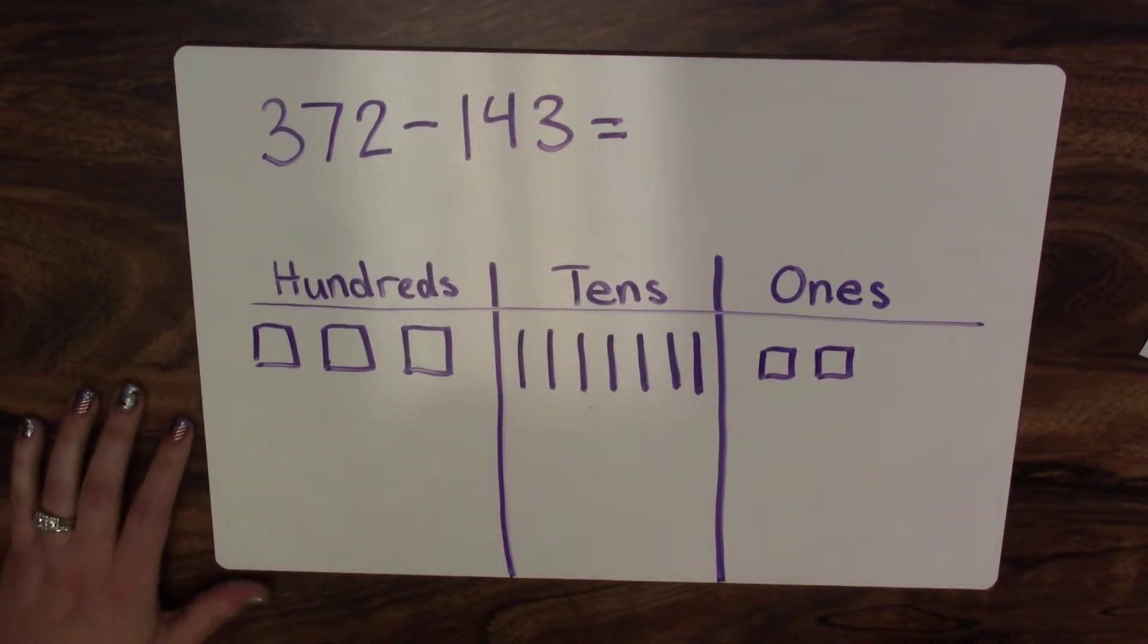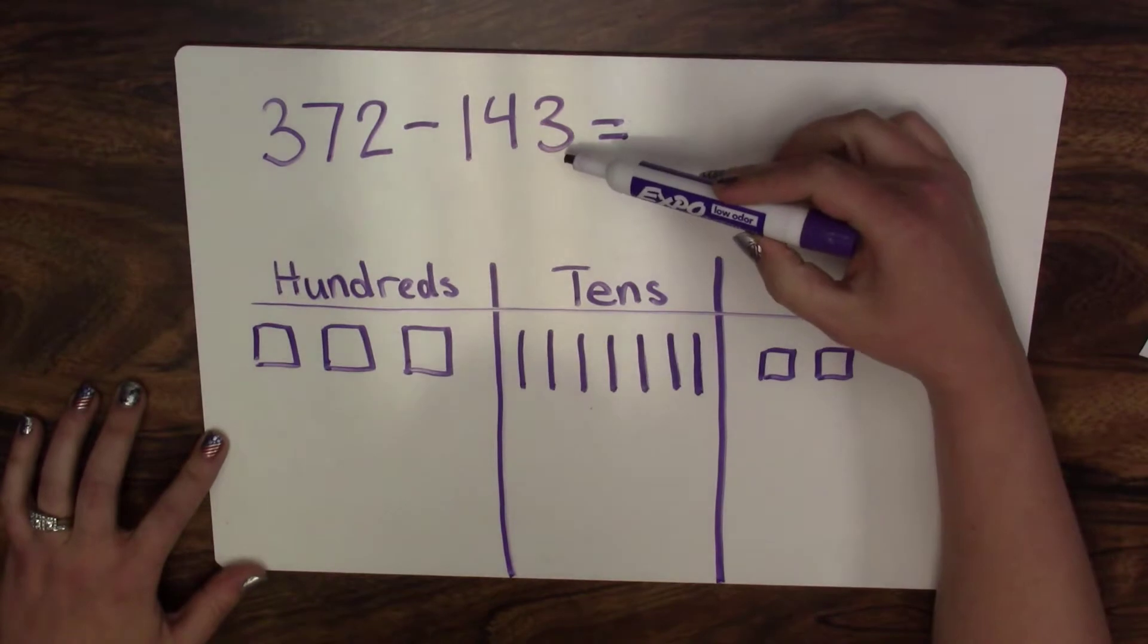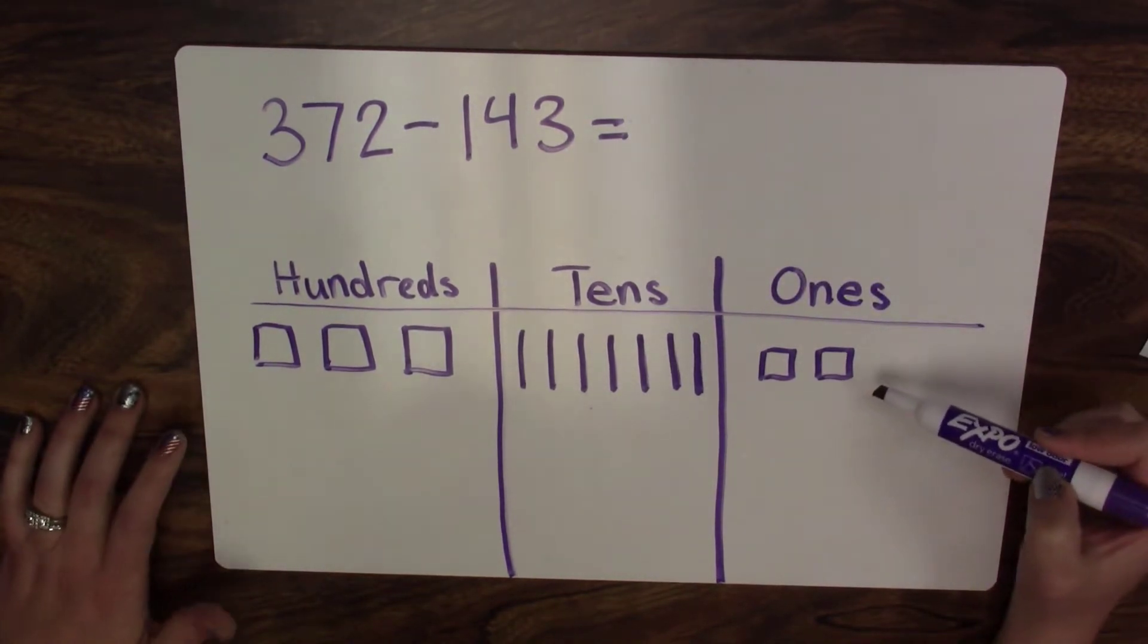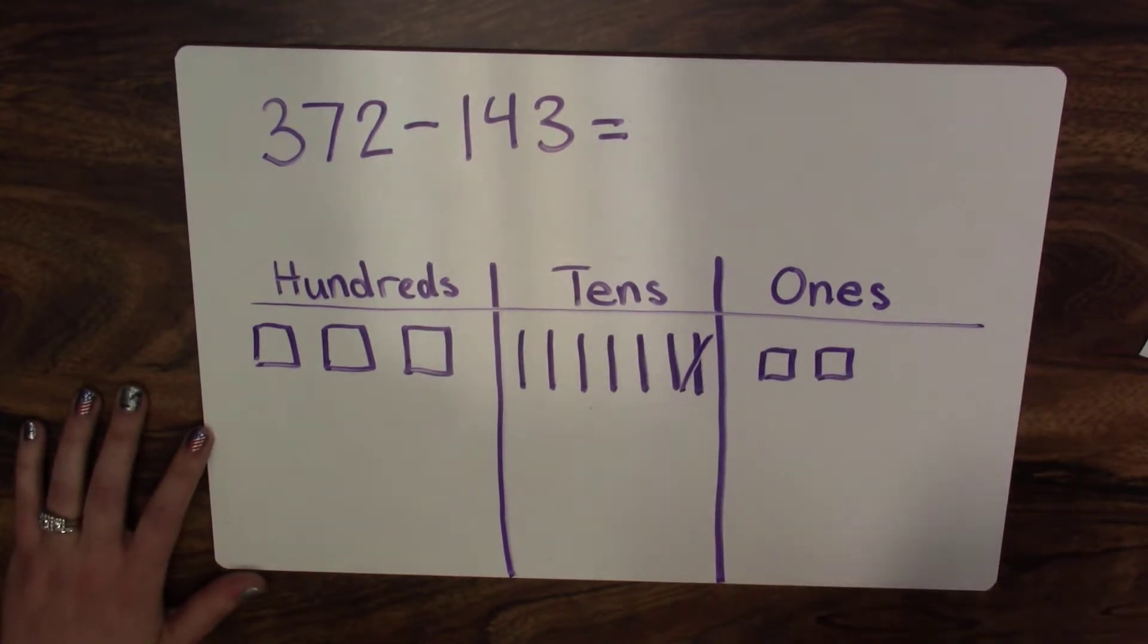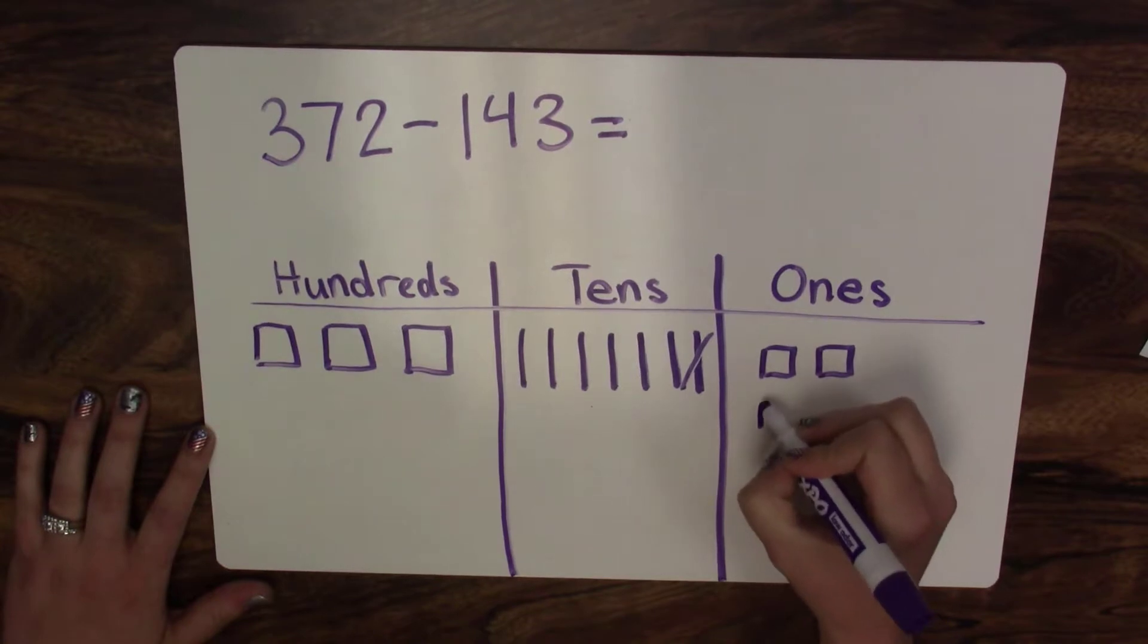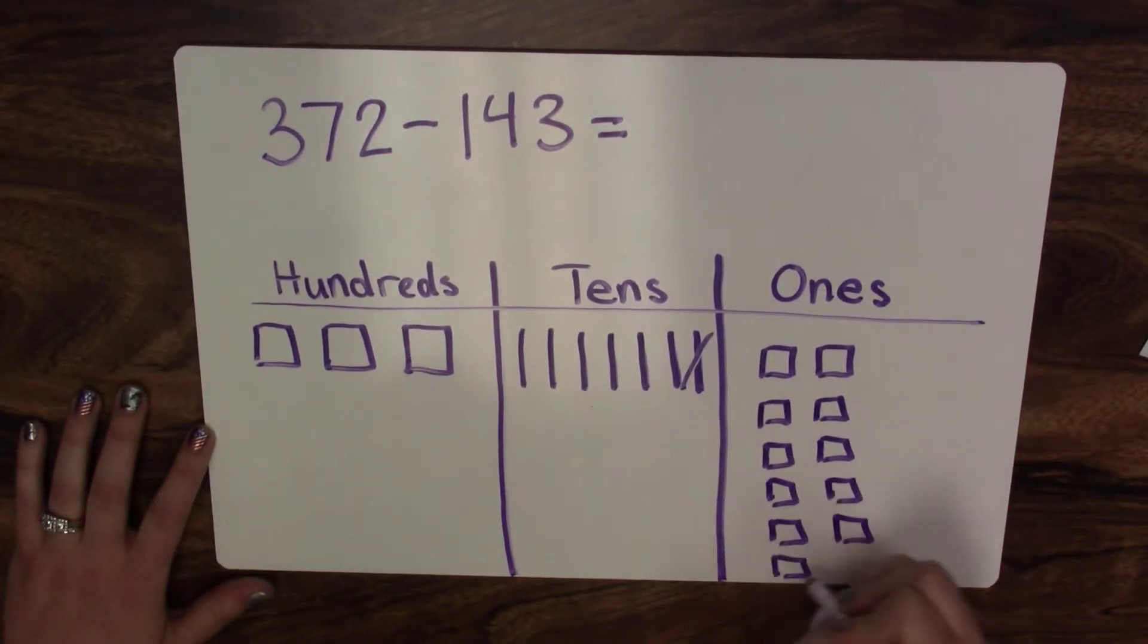Now because I'm finding the difference, I'm going to start taking away from these place values. I'm going to first look at the ones. I know I need to take away three ones, but when I look in this place value, I only have two. So I know I need to take my magic hammer, as I tell my kids, and smash a ten. And I know that there are ten unit blocks in this ten rod. So I'm going to take those ten unit blocks and move them to the ones place.